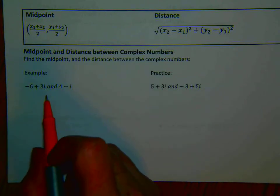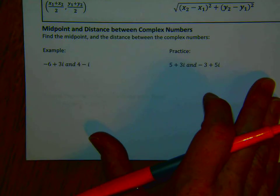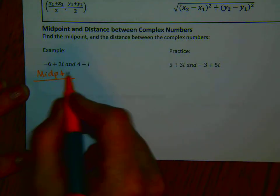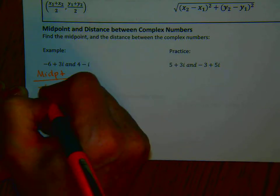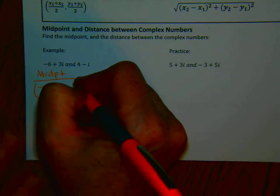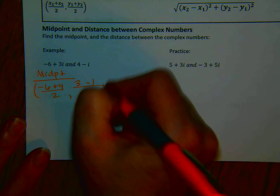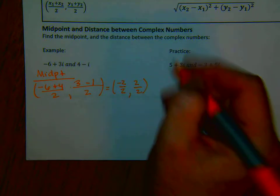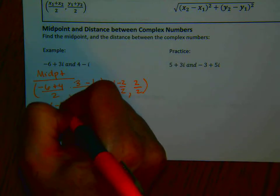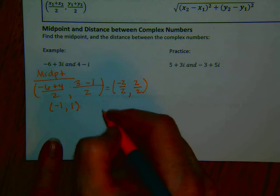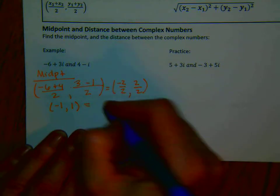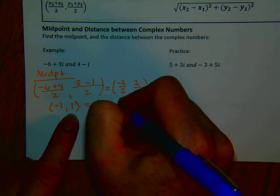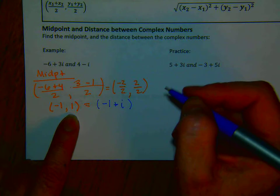If we have the two points negative 6 plus 3i and 4 minus i, how do we find the midpoint? We take x1 plus x2 over 2, which is negative 6 plus 4 over 2, and y values 3 minus 1 over 2. That equals negative 2 over 2 and 2 over 2, giving us negative 1 and 1. Writing that as an imaginary number: my x-coordinate is real, negative 1, and my y-coordinate is imaginary, so I translate that back - the midpoint is negative 1 plus i.